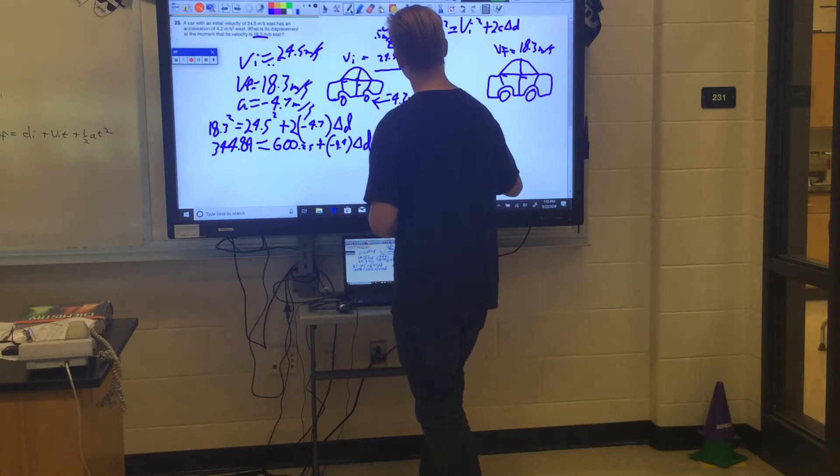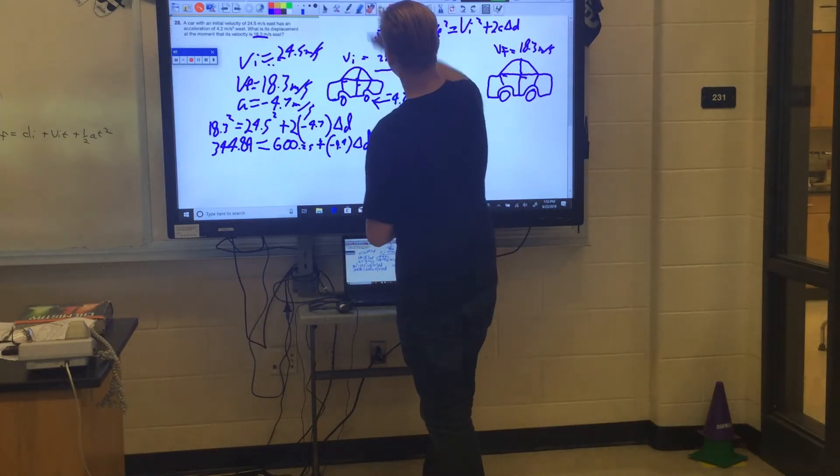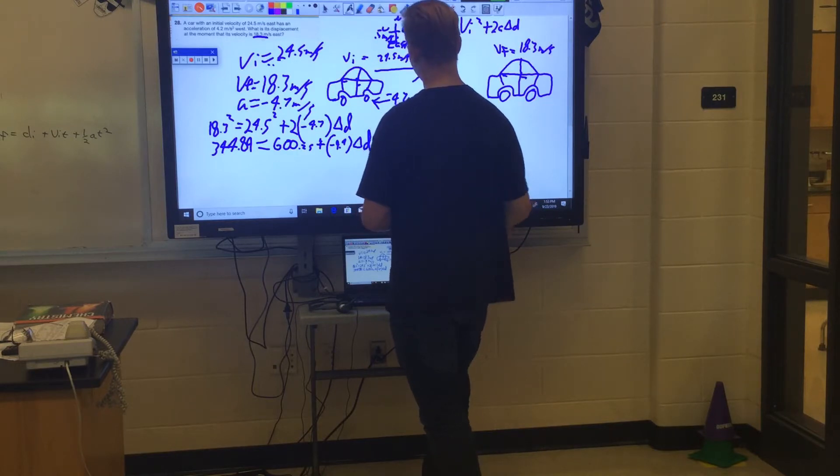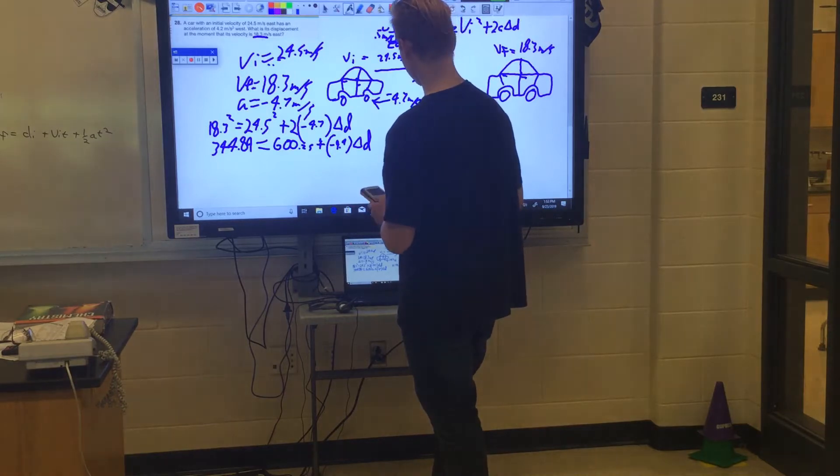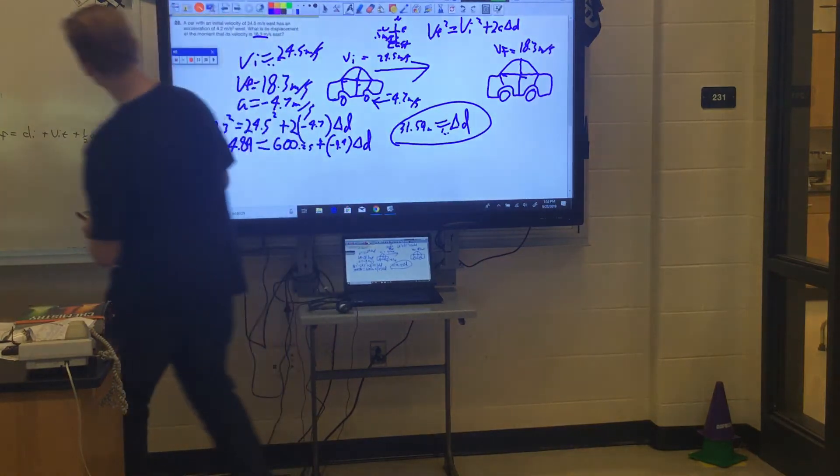That is in the problem. Acceleration of 4.6 meters per second squared west means it's negative. It's going the opposite direction. You did good. Yeah, two, it's in the problem. All right, that's right, Ryan. Circle it and step aside, please. Okay, thanks, man.